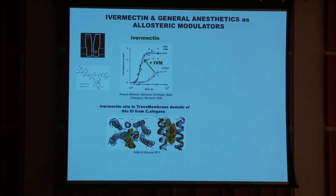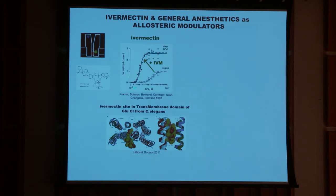The most interesting feature for the pharmacologist of this receptor is that there are not only the active sites — like the acetylcholine binding site and the ion channel — but in addition there are other categories of sites. Here, a site for ivermectin, which is used against helminths and is a very potent pharmacological agent. You can see that this compound dramatically enhances the efficiency of the nicotinic receptor, and the site is neither the acetylcholine site nor the ion channel, but another site located at the boundary with the lipids — a typical allosteric modulator.